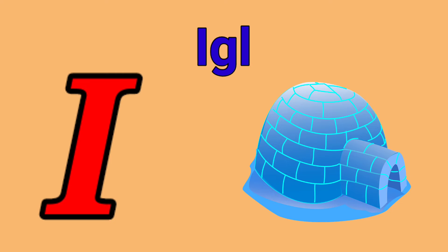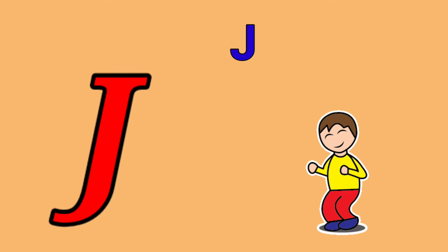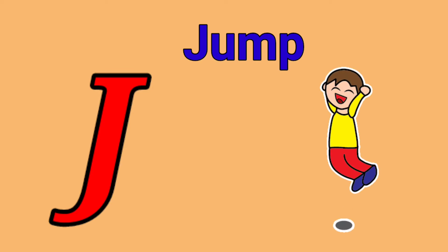I is for igloo, i-i-igloo. J is for jump, j-j-jump.